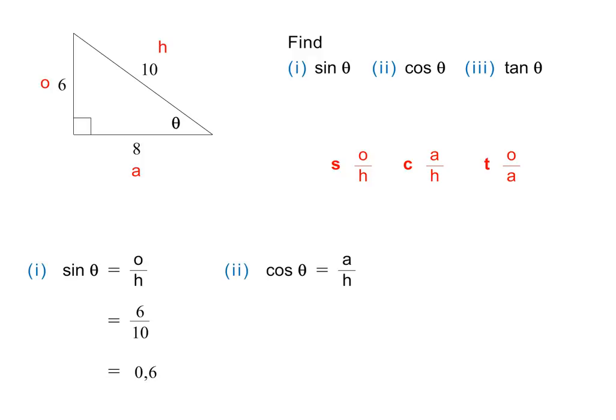In part 2, we need to recall that cos is adjacent over hypotenuse. Using the triangle, we see that this is 8 over 10, or 0.8. This completes part 2. In part 3, we are asked to find the ratio tan theta. We recall that tan is opposite over adjacent. Using the information on the triangle, this is 6 over 8, which gives an answer of 0.75. This completes the question.